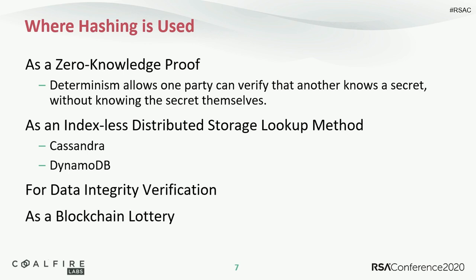You can use hashing for data integrity verification. Given that even a single-bit modification will substantially alter the outcome, folks use this for making sure large files don't get modified or corrupted in transit. If you ever downloaded an OS online, it usually came with an MD5 sum, SHA-1 sum, or SHA-256 sum — you can use that to ensure you got the right thing. And quite possibly the most novel and brilliant use of hashing was as a blockchain lottery, which is genuinely fascinating how somebody put that math together.